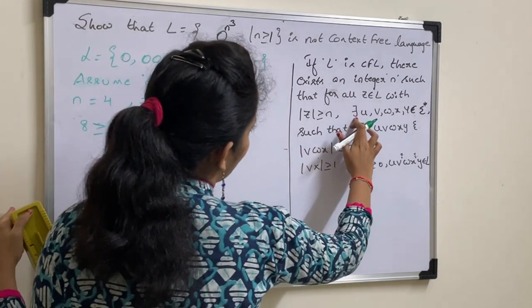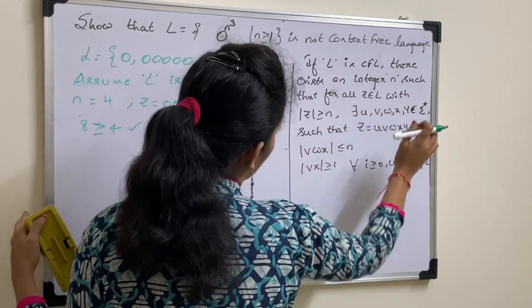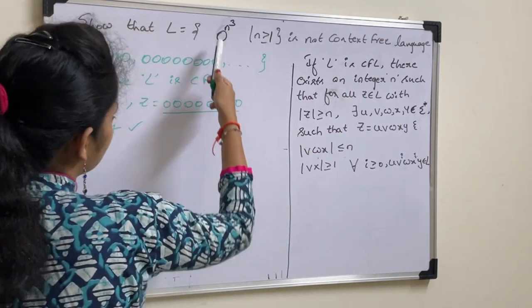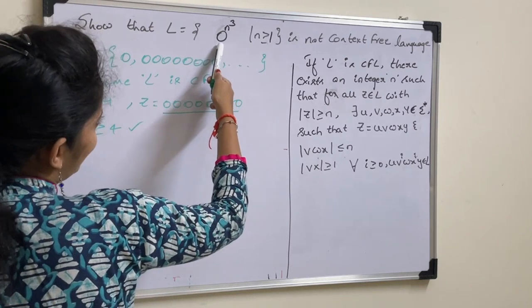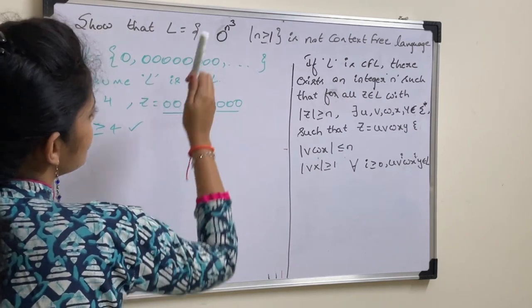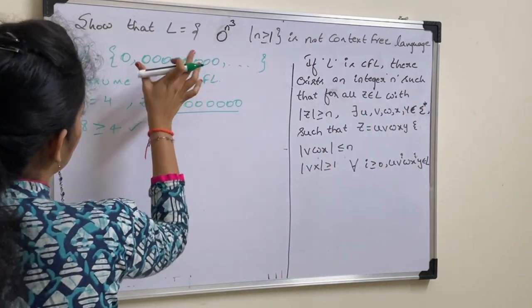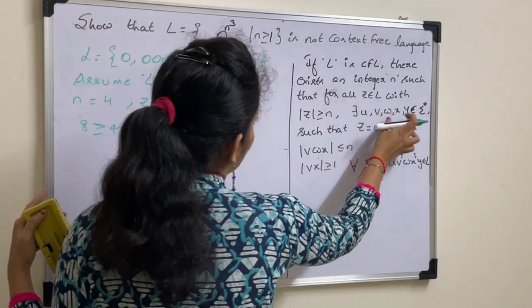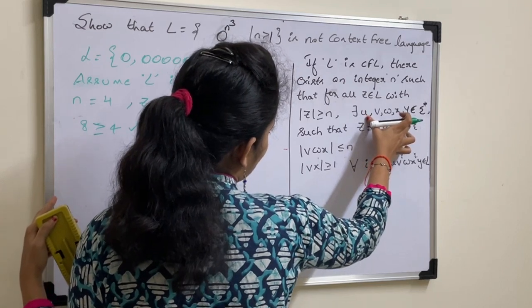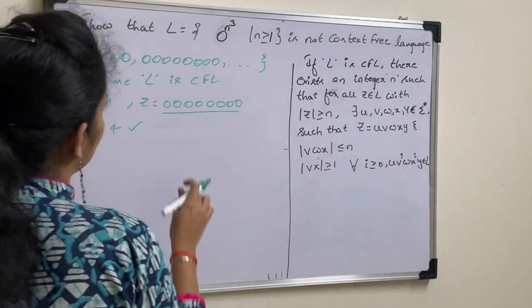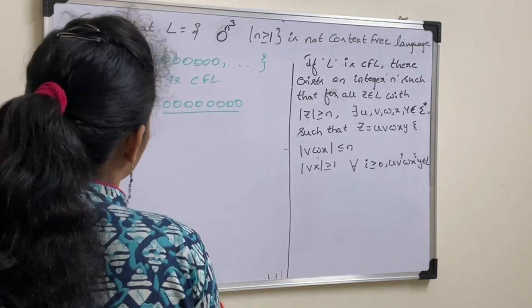Next, there exists u, v, w, x, y which belongs to sigma star. Here, sigma is the alphabet and we need to take only 0 as language contains 0. So, 0 star. You can have any combinations of 0s. You need to take u, v, w, x, y from that combination. They should belong to this 0 combination, 0 star.